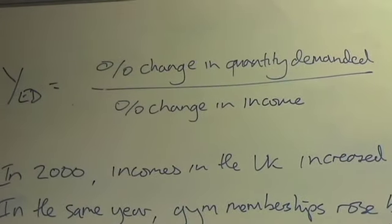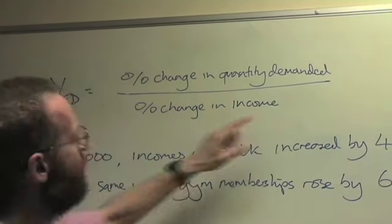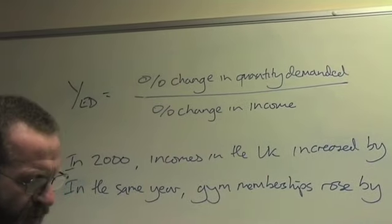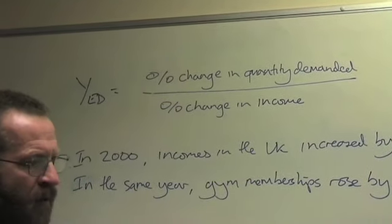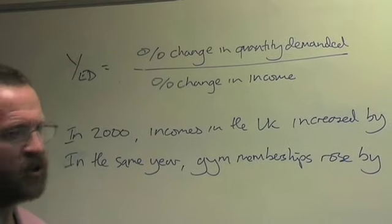First of all, know the formula. The formula: percentage change in quantity demanded divided by percentage change in income. In this case, we're asking how much will demand for a particular product respond in response to a change in income.